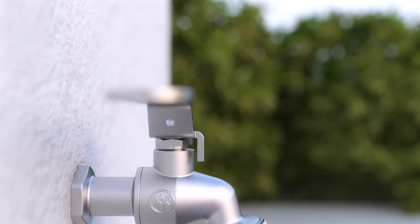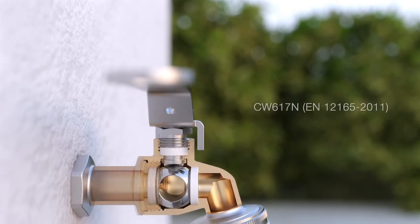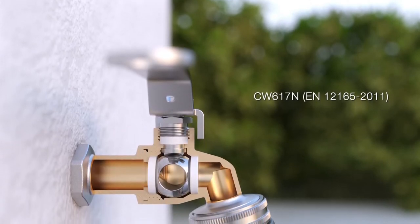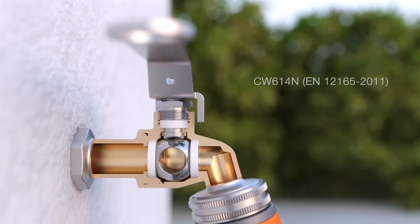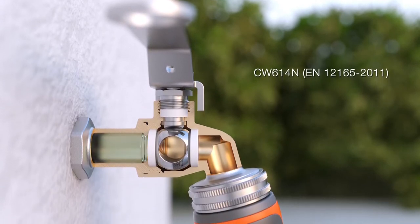The body and stem of the valve are made from forged brass, CW617N, while the chrome-plated ball is made from CW614N brass type.